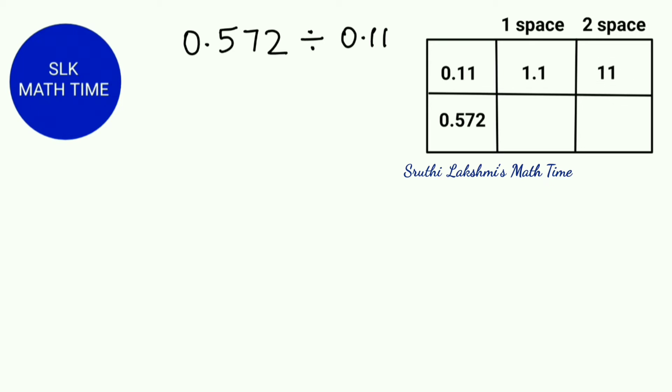So now our divisor has become a whole number. Well, how many spaces did we shift? Two spaces. So we shift our decimal point in the dividend also two spaces. So let's shift one space first. So it becomes 5.72. Then we shift one more time. So it becomes 57.2.